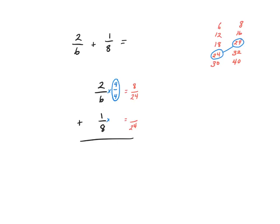I do the same thing to my other fraction. Eight goes into 24 three times, so I multiply the numerator by three as well — multiplying by one whole. One times three is three, so three twenty-fourths is exactly the same as one-eighth. Now I'm ready to add. I have eight of something and three of something — those somethings happen to be twenty-fourths. Eight plus three is eleven, so my answer is eleven twenty-fourths.